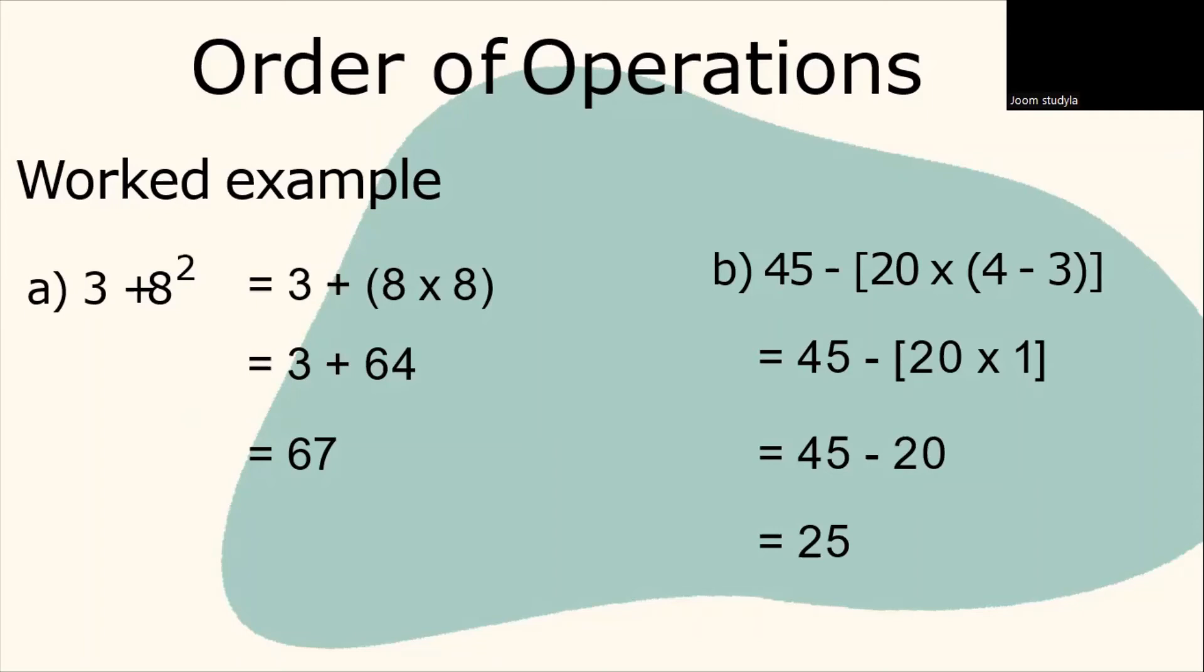The second example is 45 minus [20 multiplied by (4 minus 3)]. 4 minus 3 is equal to 1. As a result, 20 multiplied by 1 is equal to 20. Then you have to solve the equation from left to right. 45 minus 20 is equivalent to 25.